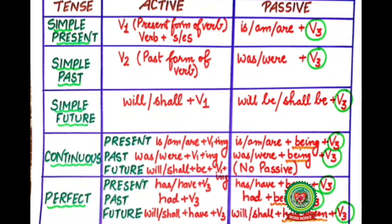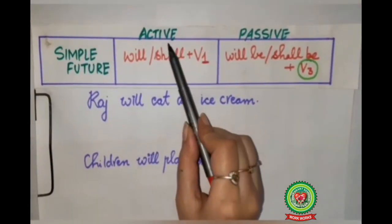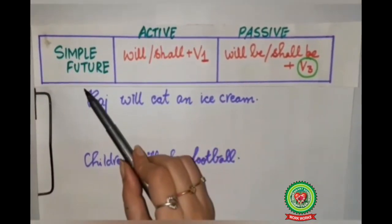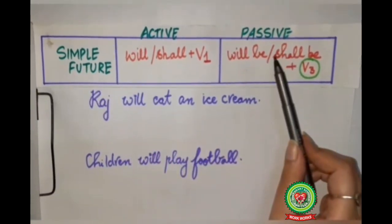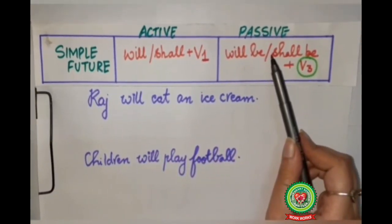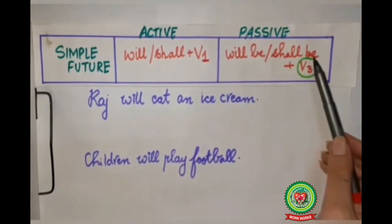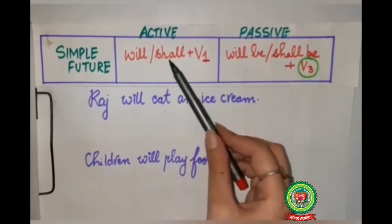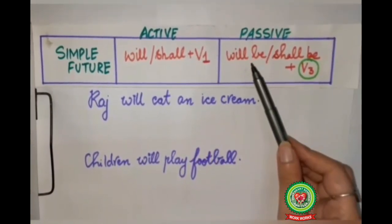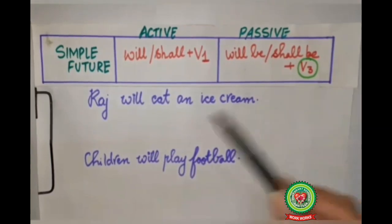Today in this video we will discuss the rules of simple future and continuous tense. If your active voice is given in simple future, then while changing it into passive voice we have to add one word, and that will be 'be'. So 'will' changes to 'will be' and 'shall' changes to 'shall be'.